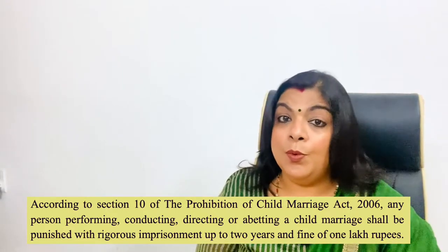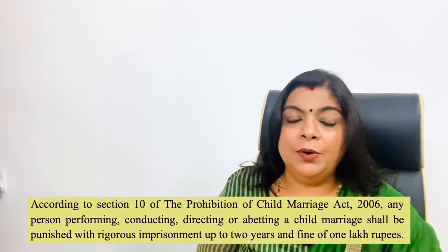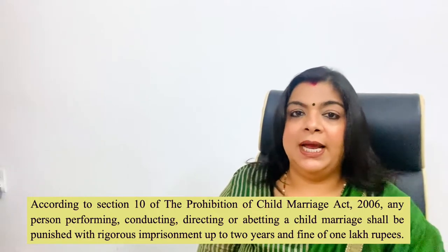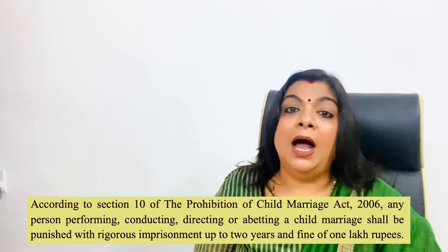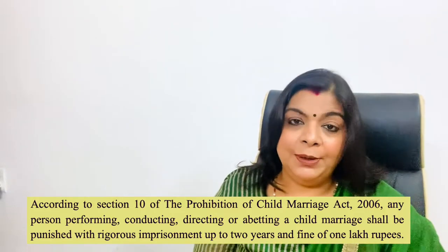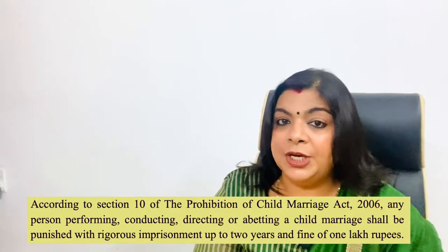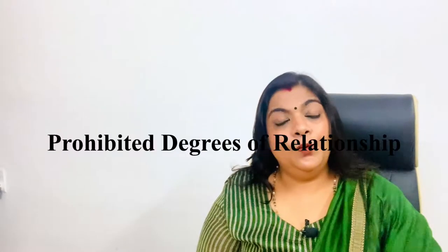The Prohibition of Child Marriage Act 2006 provides more severe punishment. As per that act, if any person conducts, performs, helps, or abets any child marriage, there is a rigorous punishment of two years and a fine of rupees one lakh.